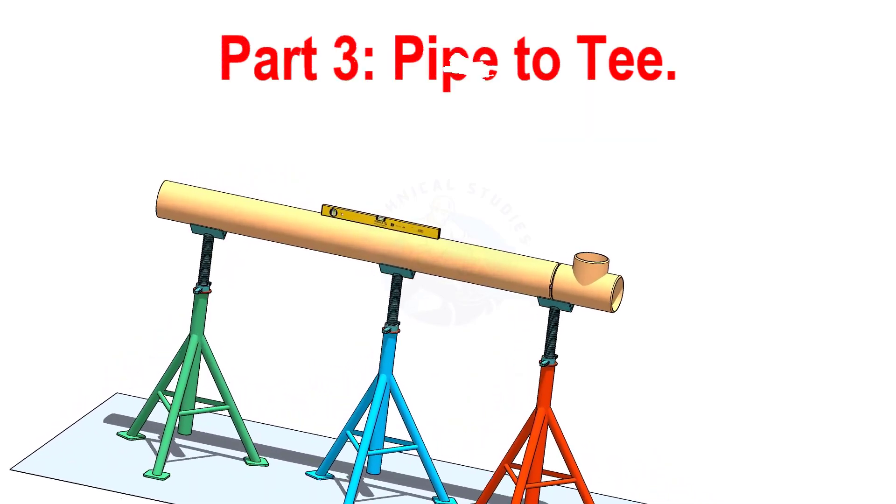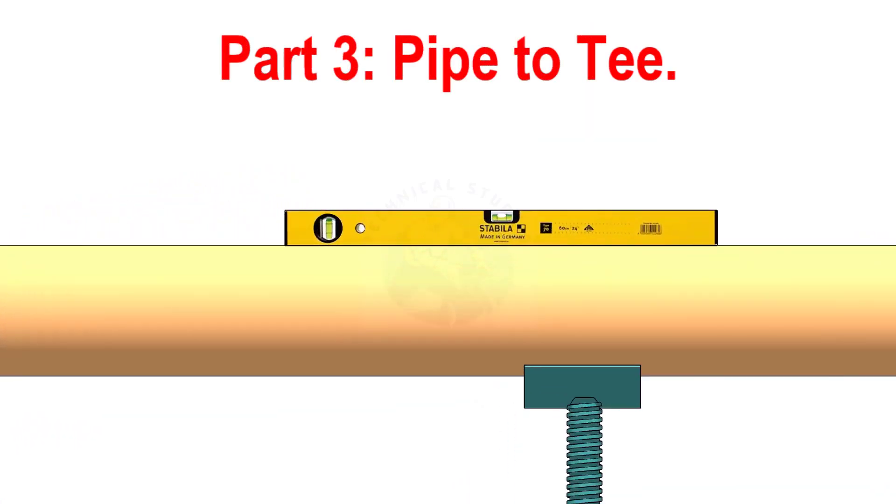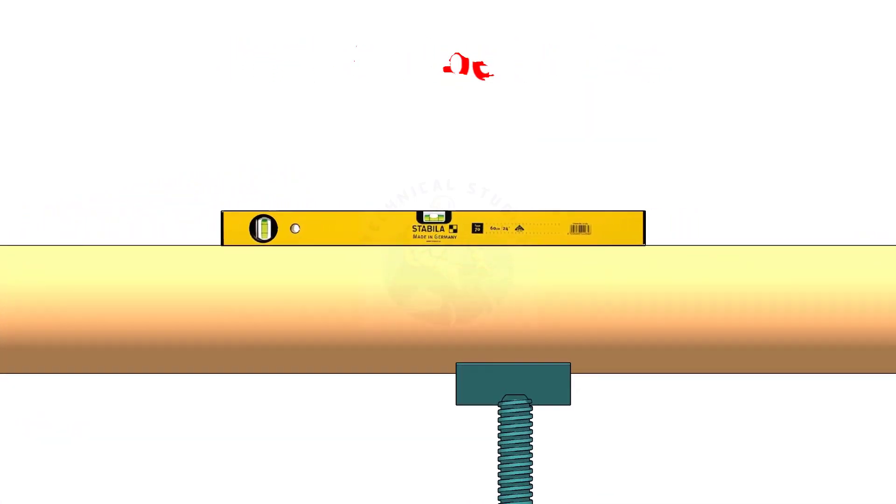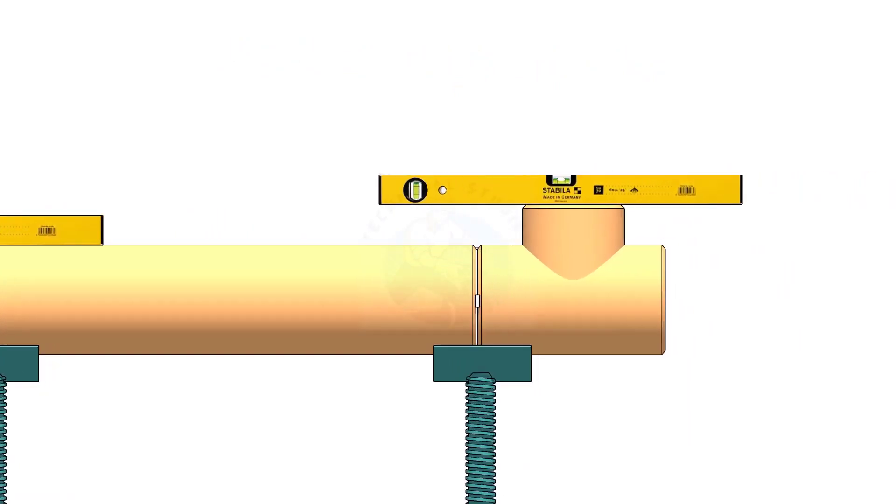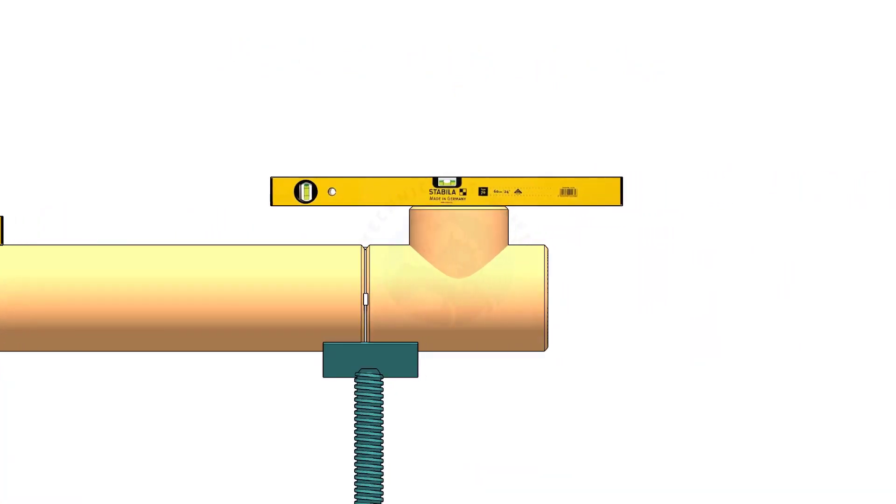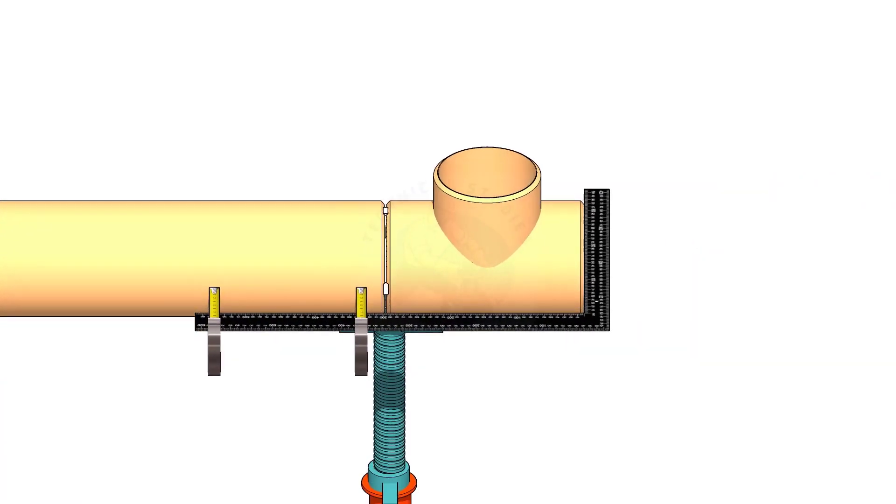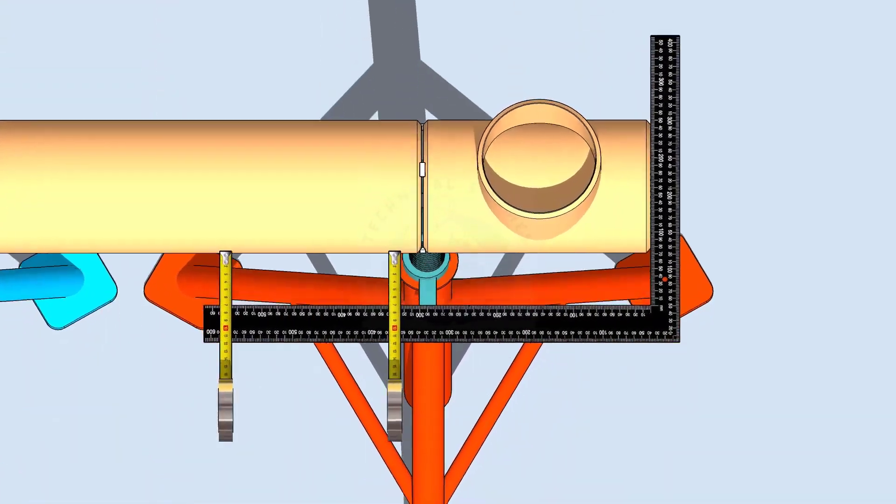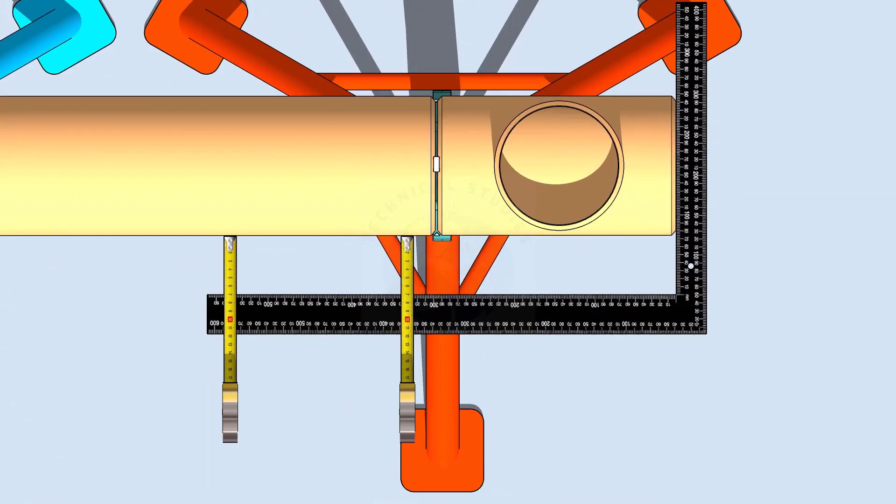When you check a pipe to T fit up, level the pipe first. Then check the level of the T. After that, hold a large right angle on the face of the T and measure if the distances are the same.